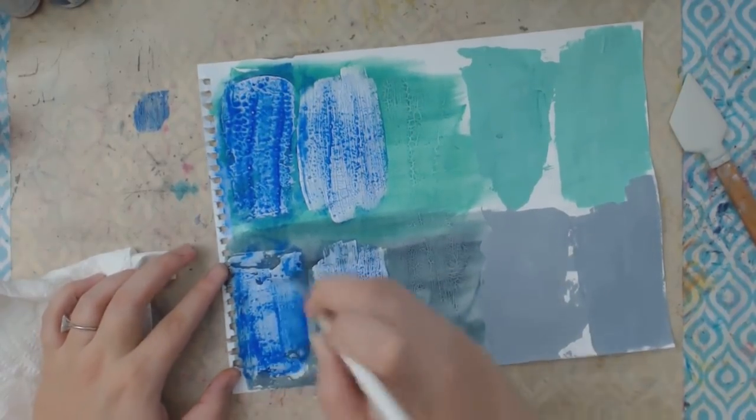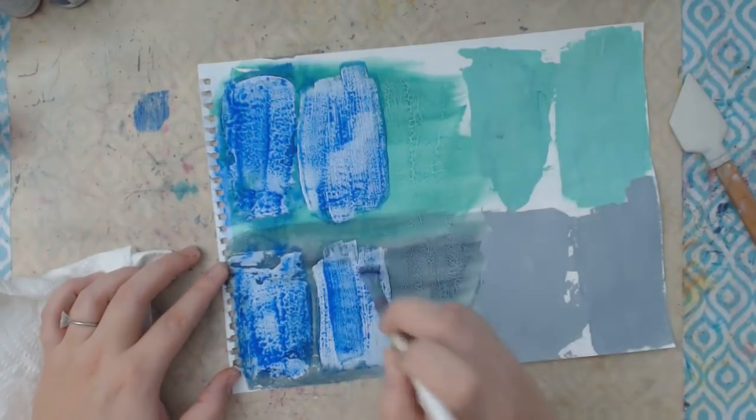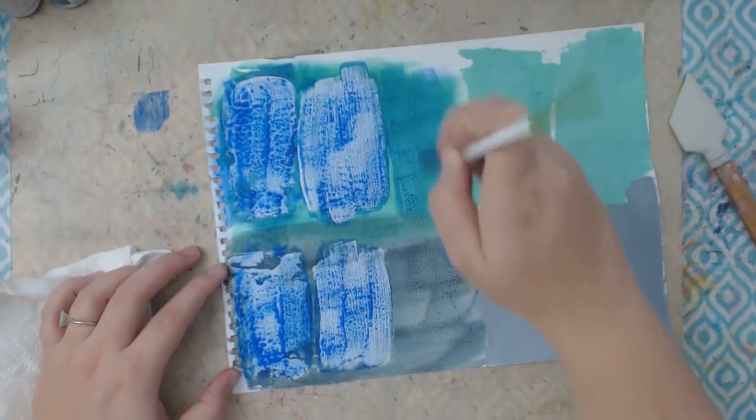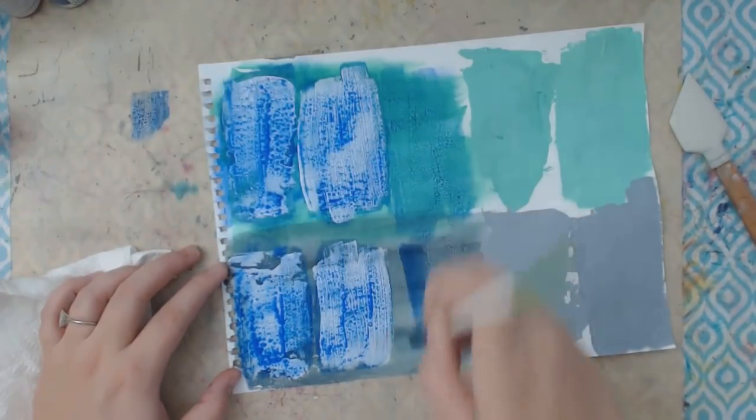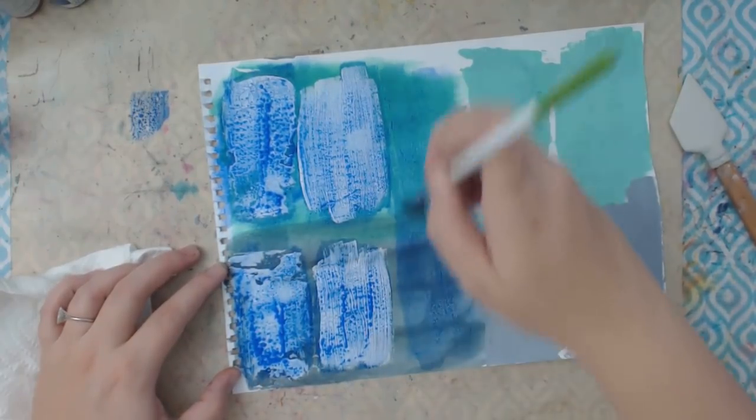And I do it over the crackle glaze also which I think looks super cool. Just because it makes everything kind of pop out a little bit. You could still see the color underneath. But you can really see those cracks now.